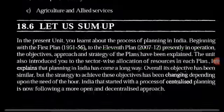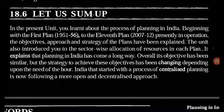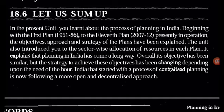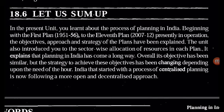In summary, this unit covered the process of planning in India beginning with the first plan (1951-56) to the 11th plan (2007-12), presently in operation. The objectives, approach, and strategy of the plans have been explained, along with sector-wise allocation of resources in each plan. Planning in India has come a long way — its overall objective has been similar, but the strategy to achieve these objectives has been changing depending upon the need of the hour. India, which started with centralized planning, is now following a more open and decentralized approach.